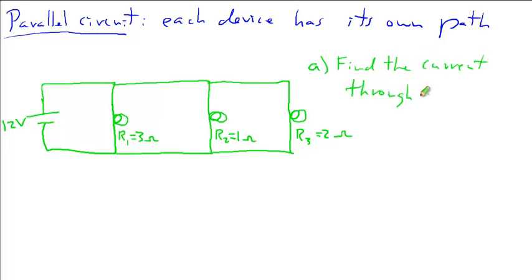Question A is find the current through each device. We're going to actually find the current, and then part B is find the voltage across each device. Notice the language: current through, because the current is actually flowing through the wires and through the devices.